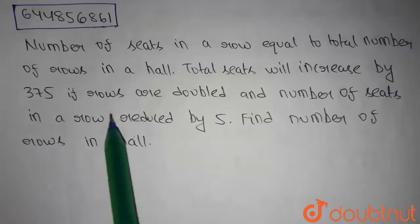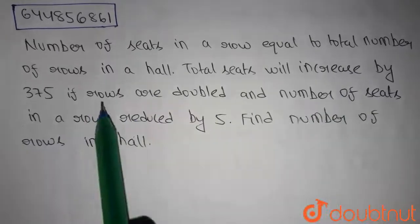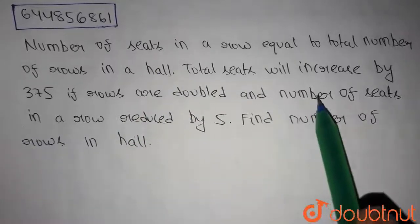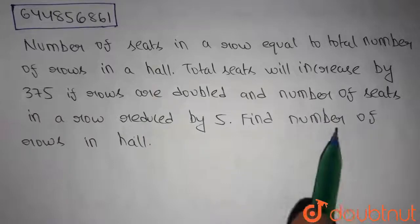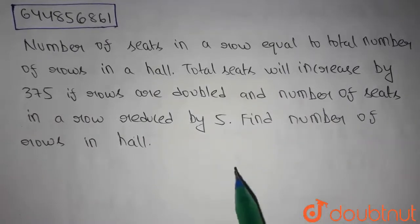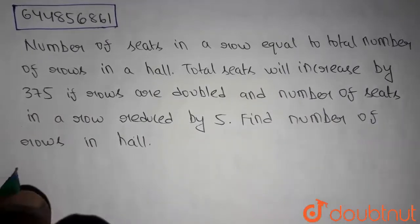Hi guys, this is our today's question. The number of seats in a row is equal to the total number of rows in a hall. Total seats will increase by 375 if rows are doubled and the number of seats in a row is reduced by 5. We have to find the number of rows in the hall.